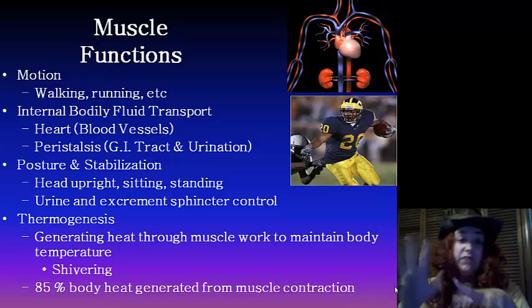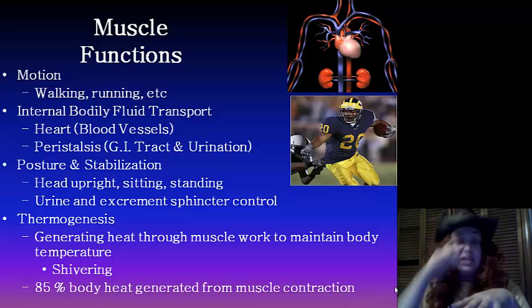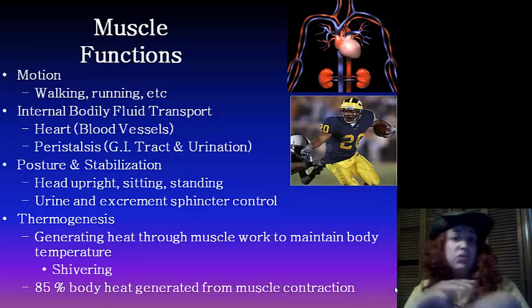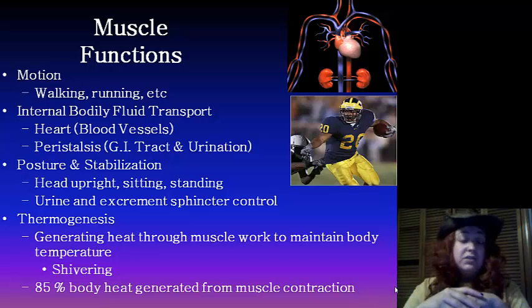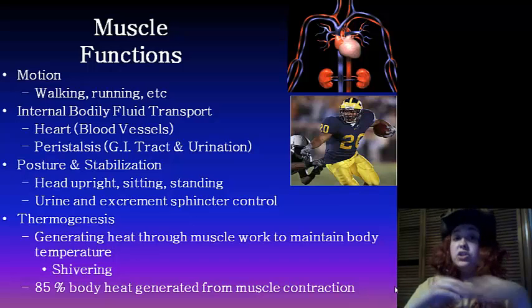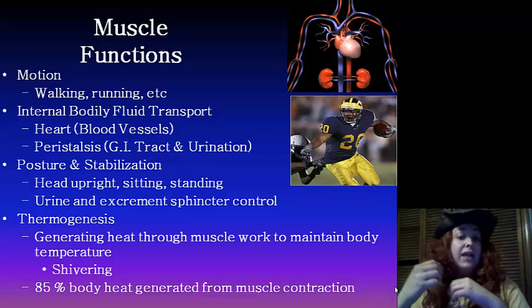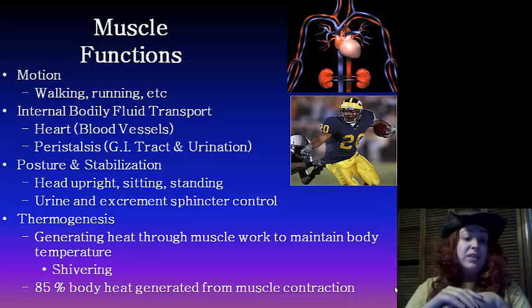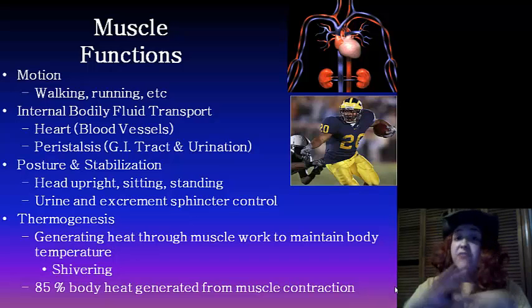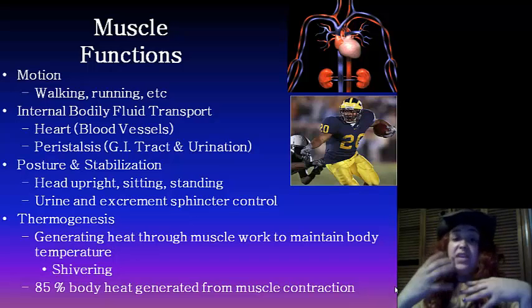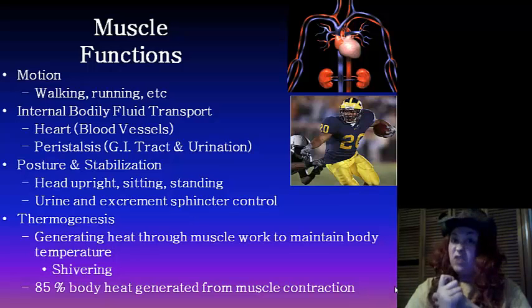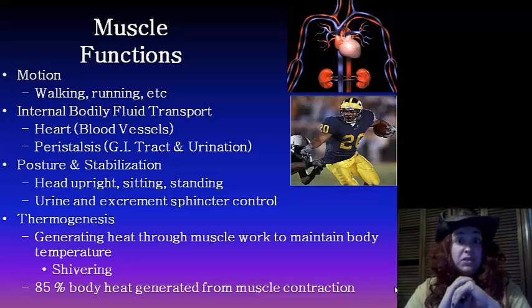We have internal body fluid transport for the blood vessels. We've got peristalsis, which means the movement of substances through your GI tract, such as your intestines or during urination. We have posture and stabilization — it keeps your head upright, sitting and standing. We have urine and excrement sphincter control. We also have thermogenesis, which is the generation of heat through muscle work to maintain your body's temperature, including shivering. About 85% of the heat generated from your body comes from muscle.